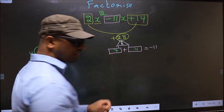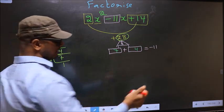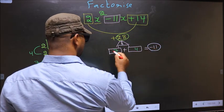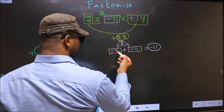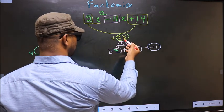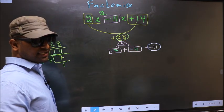Now we should adjust the signs. What I mean is, over here we have -11. To get -11, we should place negative here and also here. -7 - 4 is -11, and -7 into -4 is +28. So we have adjusted the signs.